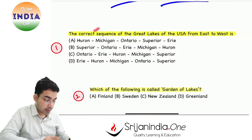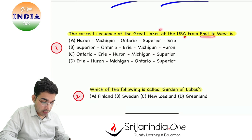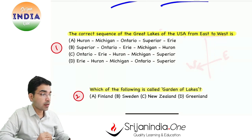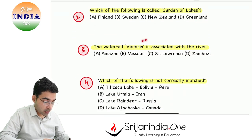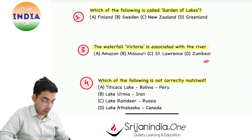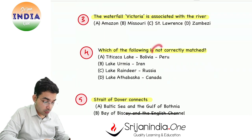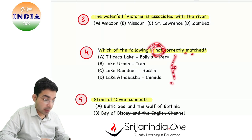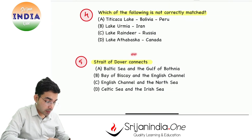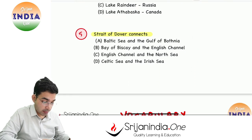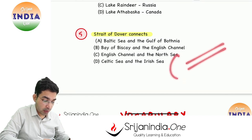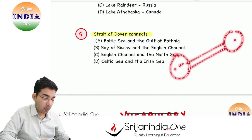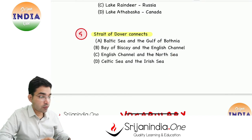Solar eclipse aaj ke sawal hai. The correct sequence of the Great Lakes of the USA from east to west — correct sequence kya hogi? Which of the following is called the garden of lakes? The waterfall Victoria is associated with which river? Which of the following is not correctly matched? Strait of Dover kin do places ko connect karti hai? Strait is a narrow water body connecting two large water bodies. So these are five questions for today.